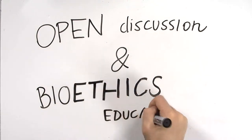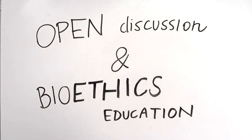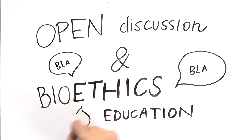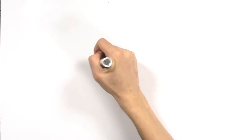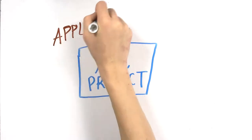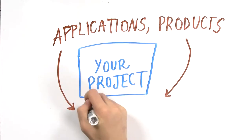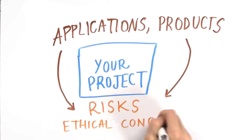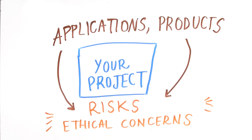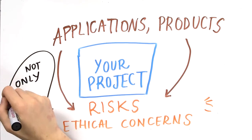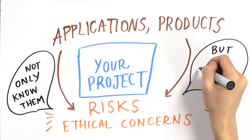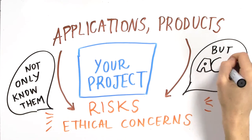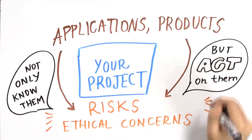In this video, you will learn about how to allow an open discussion on bioethics within your iGEM team. Before starting any project, you need to think about not only the potential applications of your engineered organism, but also the potential risks and ethical concerns that may arise from use of said organism. In some cases, it may not be enough to simply keep these concerns in mind, but rather be able to act on them in an open way as well.